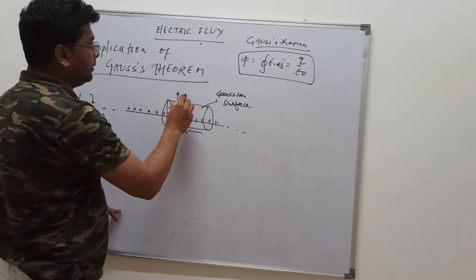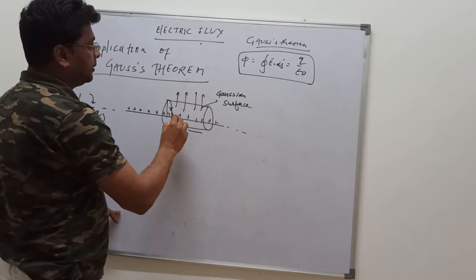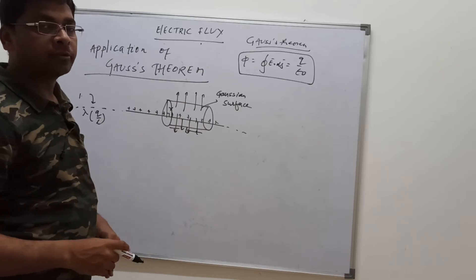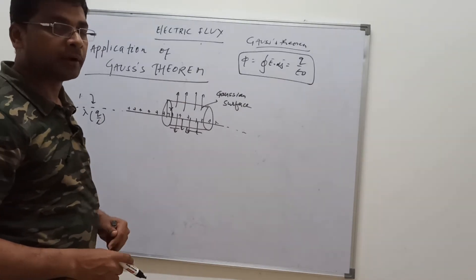Now electric field is always away from the charged particle, so we can show like this. This is the way electric field lines travel away from the positive charge particle.